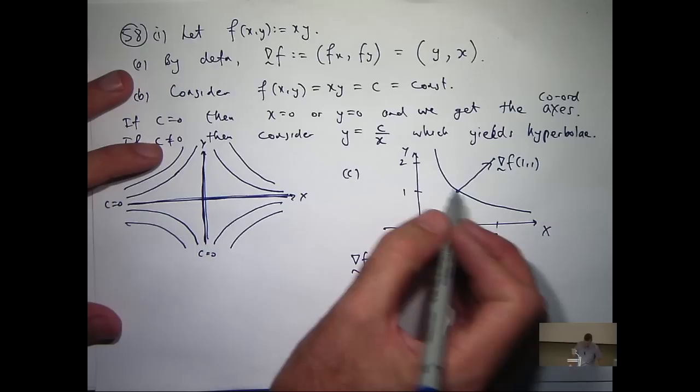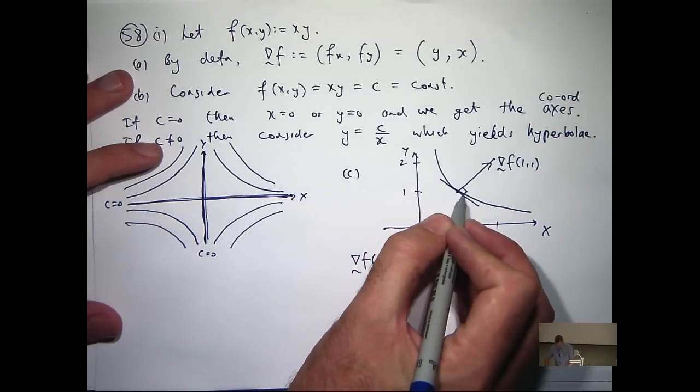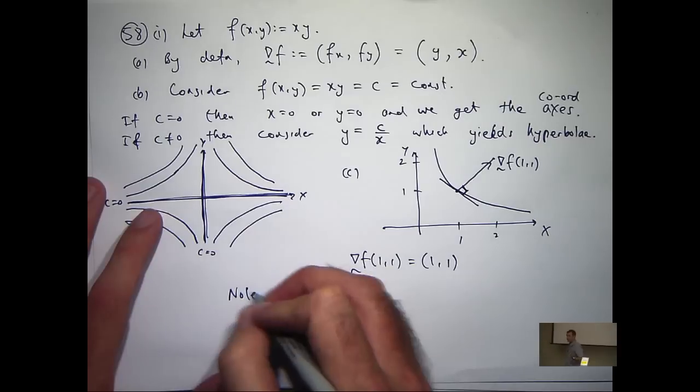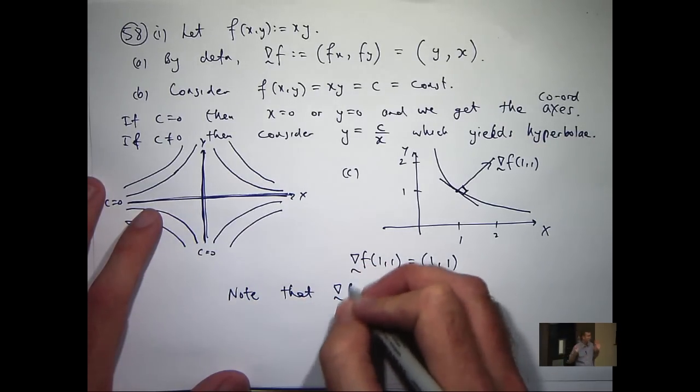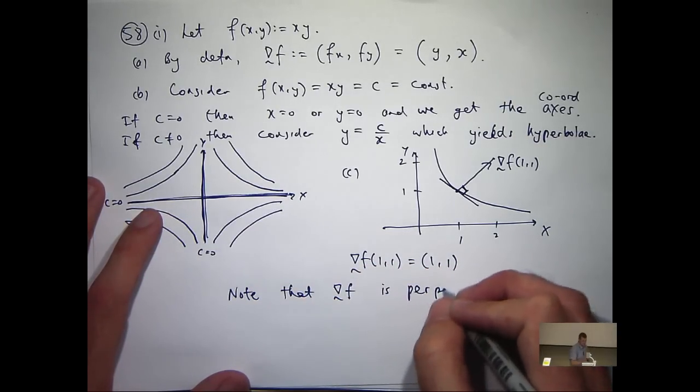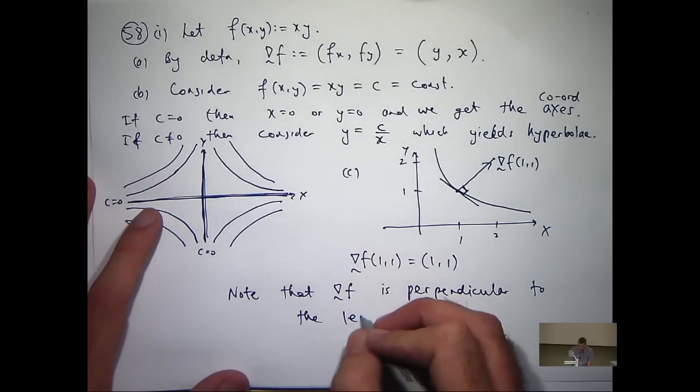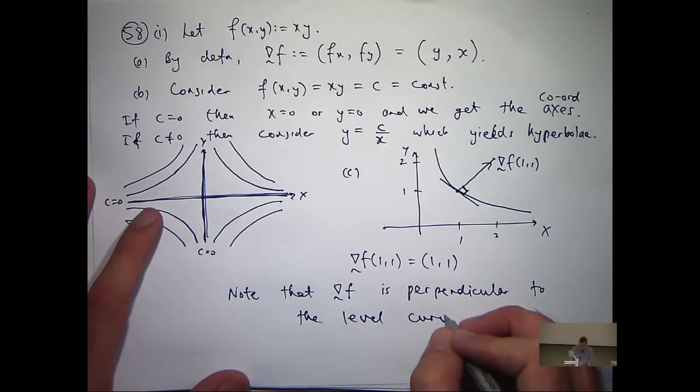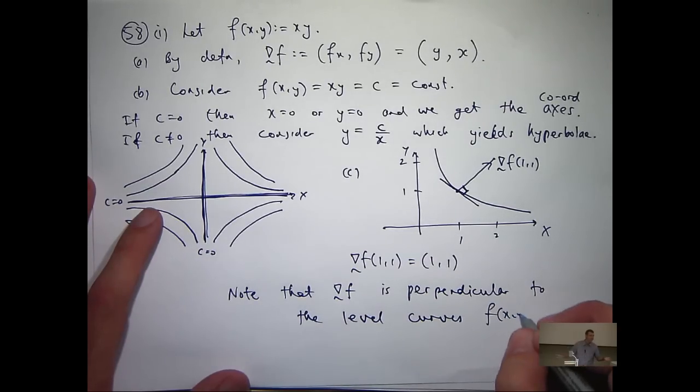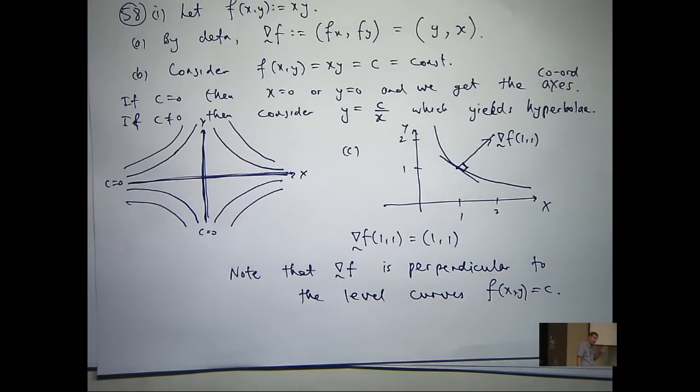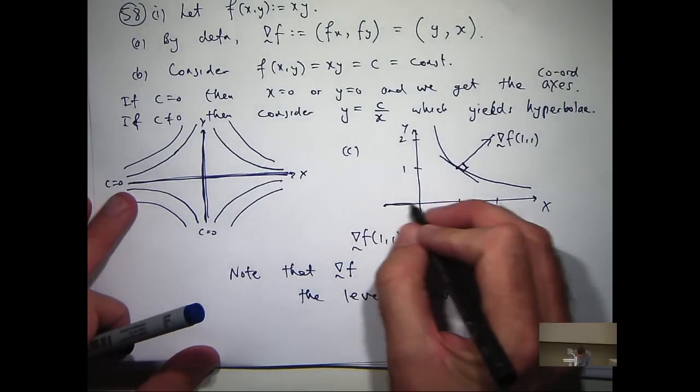So if I was to draw, say, a tangent vector in there, I would get a right angle. Perpendicular or normal to. Let's draw in another one, just for a little bit more completeness.